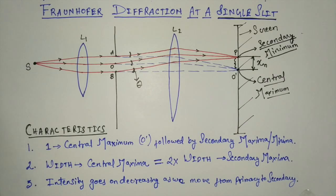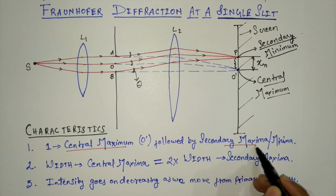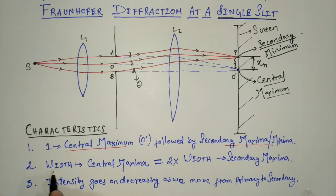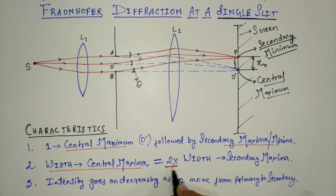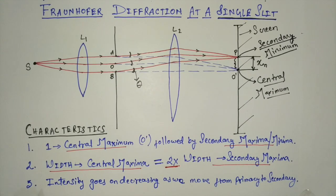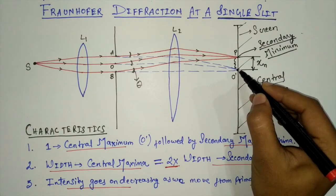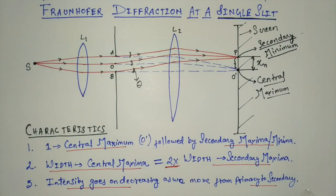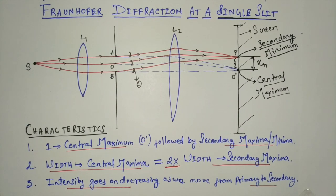To revise: in Fraunhofer diffraction, there is one central maximum followed by secondary maxima and minima. The width of the central maximum equals two times the width of the secondary maxima, and intensity decreases as we move from primary to secondary. The most intense point is the central maximum. In the next part of the video, we will go into the derivation and formula, and how to solve numericals of Fraunhofer diffraction.